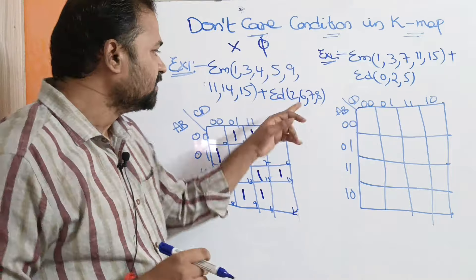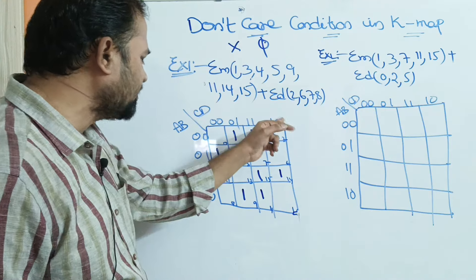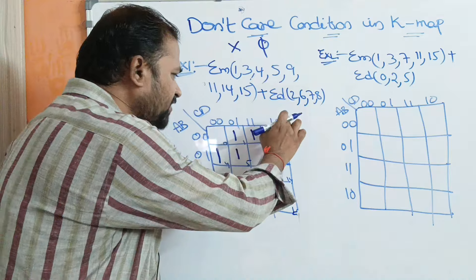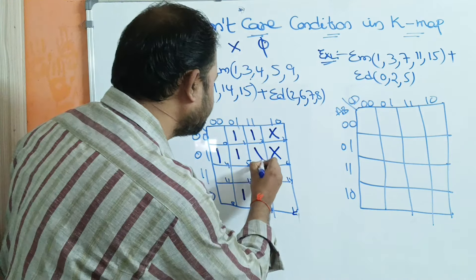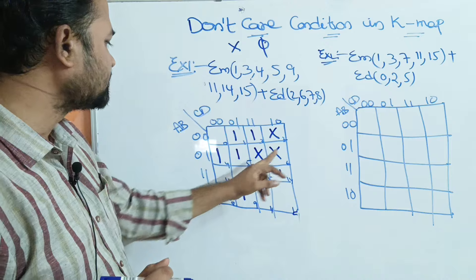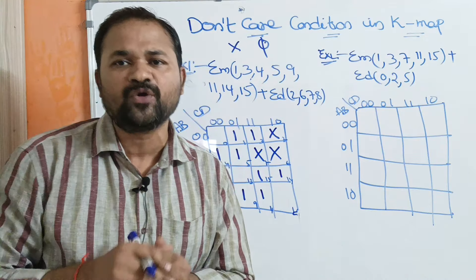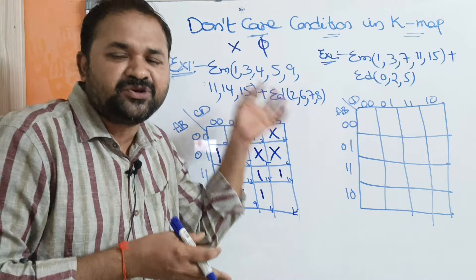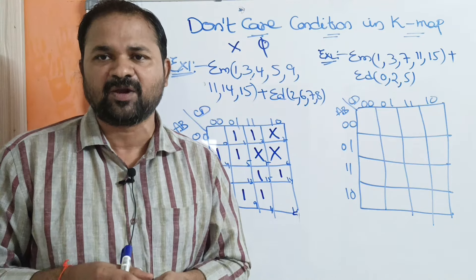For the minterm inputs, the output is 1. For the don't care cells 2, 6, 7, 8 — cell 2 represents 0,0,1,0, so for this input combination the output is don't care. Similarly for cells 6, 7, and 8, the output is don't care. Now, we have to cover all the ones. But for don't cares, it is not necessary to include all of them. According to the problem, we may use the don't care or we may not — there is no problem. The group should be in powers of 2, and here we have 16 cells.